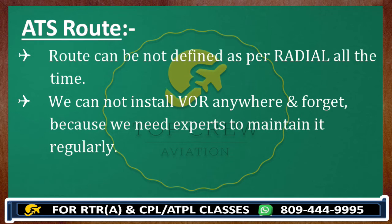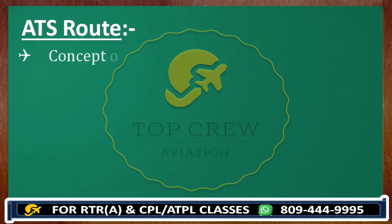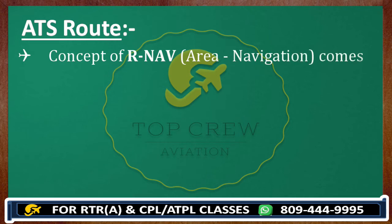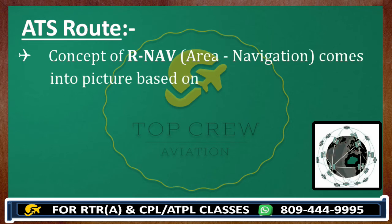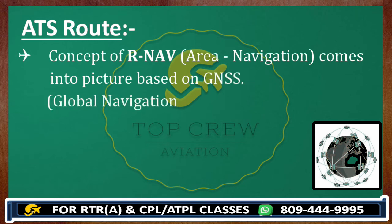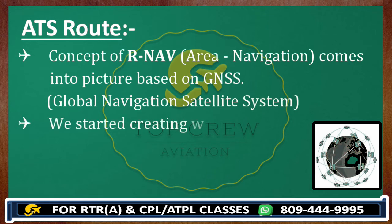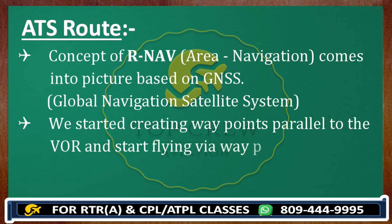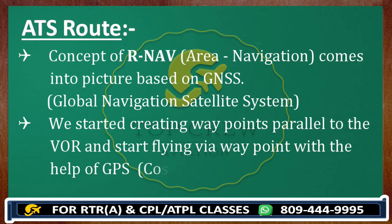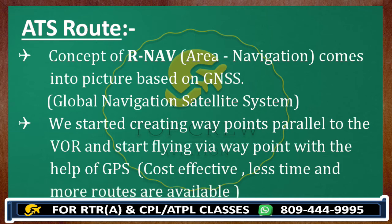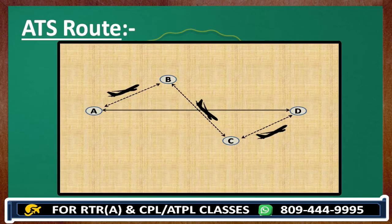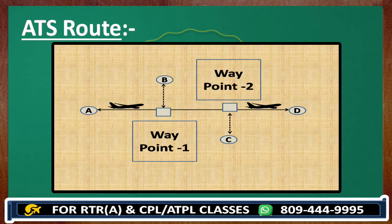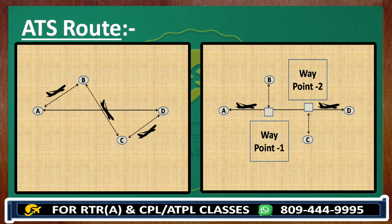The concept of area navigation — RNAV — came into the process. Based on GNSS (Global Navigation Satellite System), we started creating waypoints parallel to the VOR and began flying via those waypoints with the help of GPS. It is cost effective, saves time, and more routes are available. Earlier we were flying A to B, then B to C, then C to D. Now we fixed waypoints so that with the help of GPS we can fly directly from A to D. That was the benefit of area navigation.